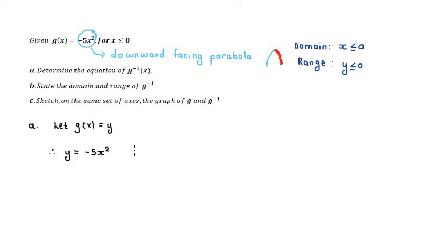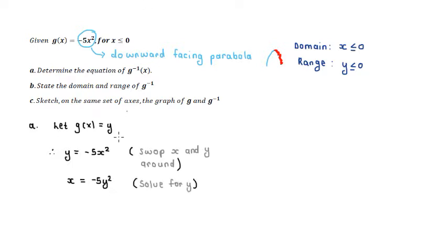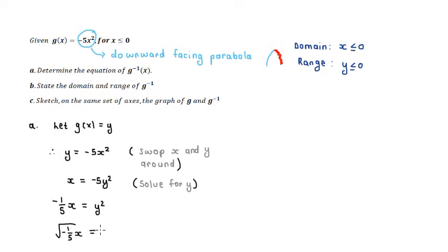Now we go through the process of swapping X and Y around as usual. That gives us X equals negative five Y squared. Now we need to solve for Y from its current position. Dividing both sides by negative five, we get negative one over five times X equals Y squared. Taking the square root of both sides, we get the square root of negative one over five X equals Y.